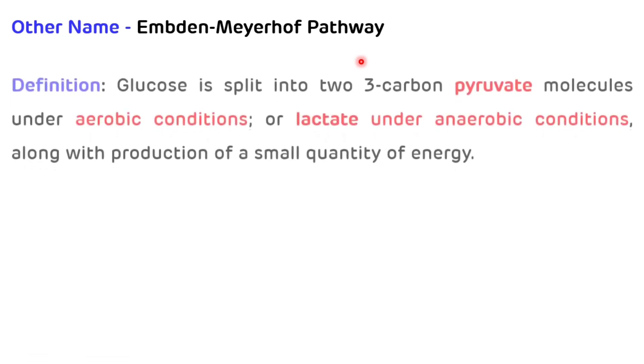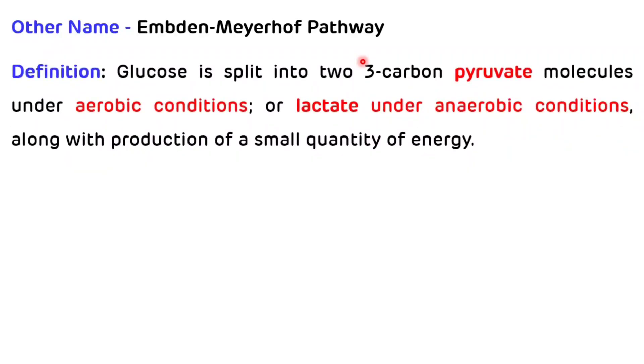First, what is the another name of glycolysis? The glycolysis pathway is also known as the Embden-Meyerhoff pathway. Now we will see the definition of glycolysis. Glucose is split into two three-carbon pyruvate molecules under aerobic conditions — that is in the presence of oxygen — or lactate under anaerobic conditions, that is in the absence of oxygen, along with production of a small quantity of energy in the form of ATP.